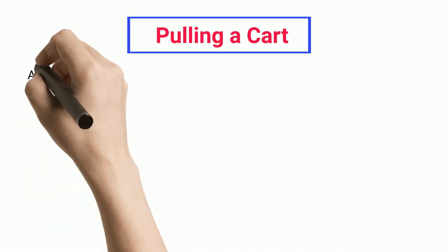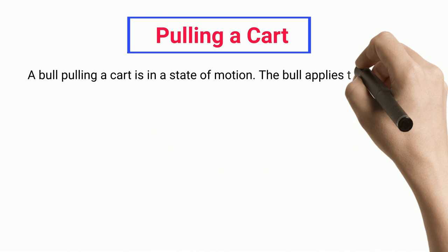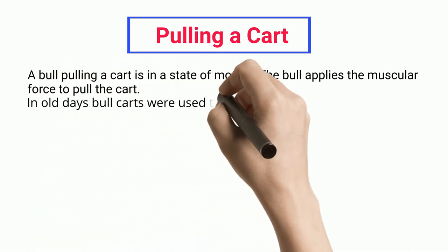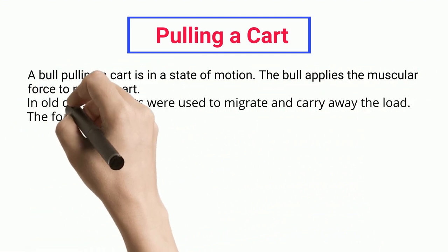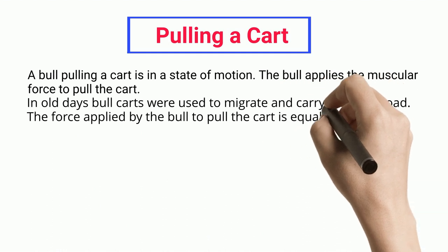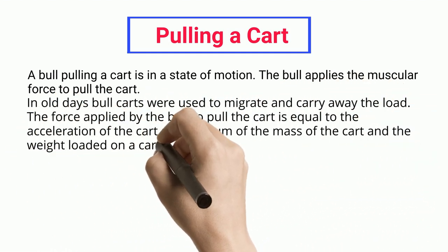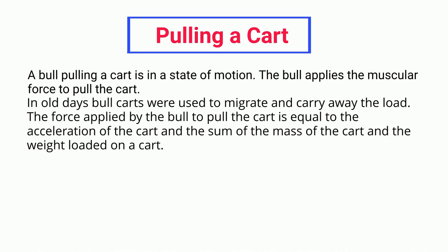Pulling a cart. A bull pulling a cart is in a state of motion. The bull applies the muscular force to pull the cart. In old days, bull carts were used to migrate and carry away the load. The force applied by the bull to pull the cart is equal to the acceleration of the cart and the sum of the mass of the cart and the weight loaded on a cart.